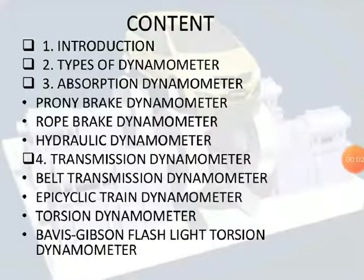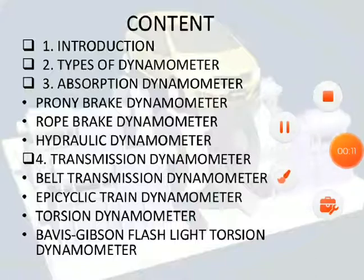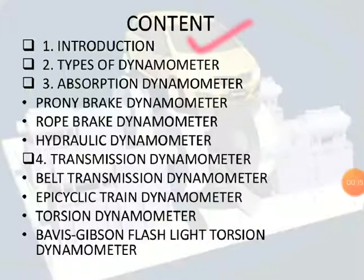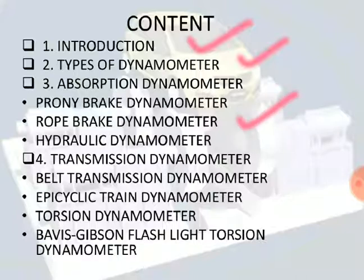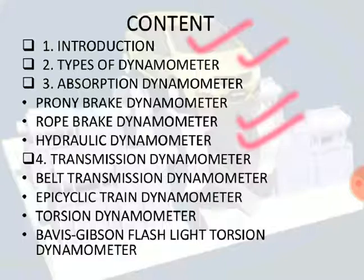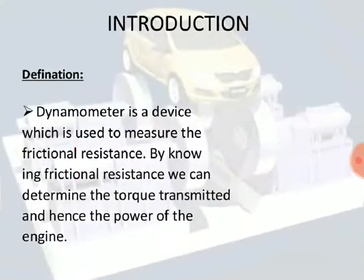Good morning students. Today we will have another lecture on Theory of Machines, and today's topic is dynamometer. The contents we are going to discuss are: first, what is a dynamometer (introduction); second, the types of dynamometer; and then two types of absorption dynamometer — rope brake dynamometer and hydraulic dynamometer.